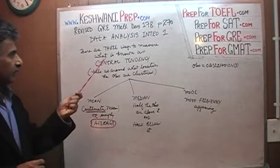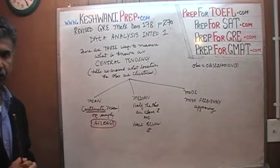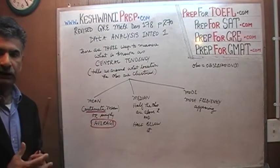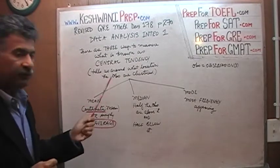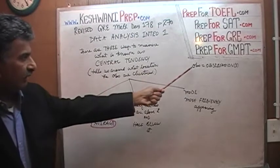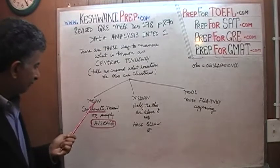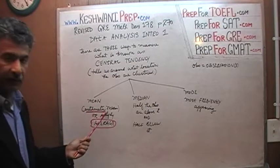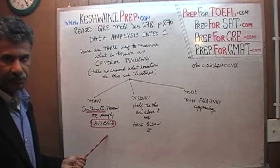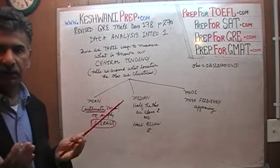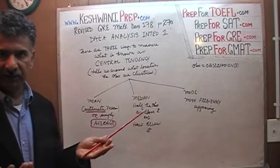There are three ways to measure what is known as central tendency. Central tendency means exactly what it says — it tells you the tendency of observations to cluster around a location. The three tools commonly used are: mean, which they call the arithmetic mean. On the exam they will use the term arithmetic mean — don't freak out, it simply means average. We add up all the observations and divide by the number of observations.